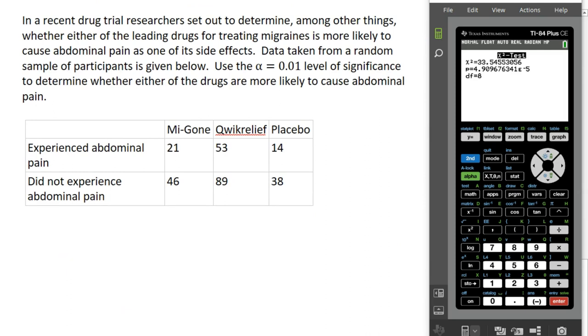Here's a drug trial. And researchers set out to determine, among other things, whether either of the leading drugs for treating migraines is more likely to cause abdominal pain as one of its side effects. So if someone is talking to their doctor and experiencing a lot of migraines and they might be concerned about this side effect, we want to know if any of these are better than another or if abdominal pain is independent of what drug we choose. So we have data taken from a random sample of participants below. I just made up these drug names, Migon and Quick Relief. And then typically we have a placebo group as well. So our participants were broken up into these three groups and then some of them experienced abdominal pain after taking the drug and some did not. We're going to use the .01 level of significance to determine if one of these drugs are more likely to cause abdominal pain.